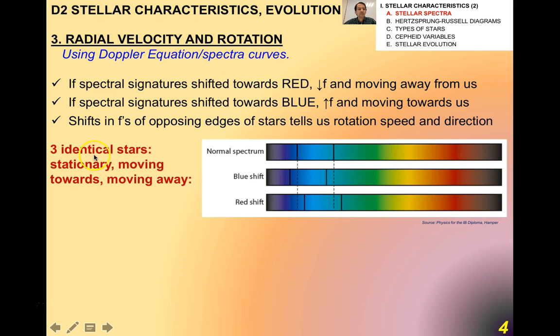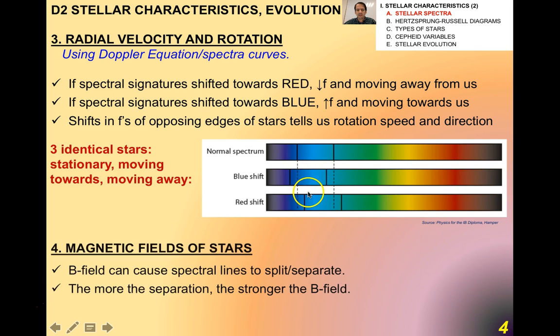So again, for example, if we have three identical stars, here's a normal spectrum stationary. One's moving towards us and one's moving away. You'll see these lines, these absorption lines, shifting.